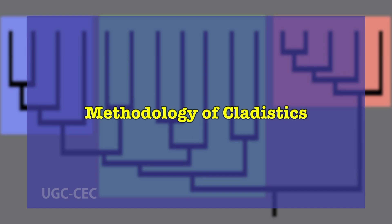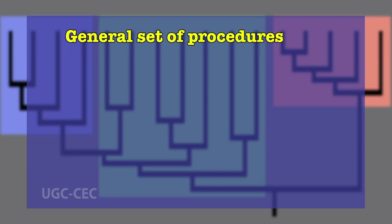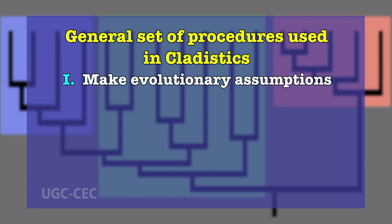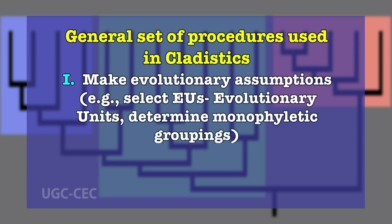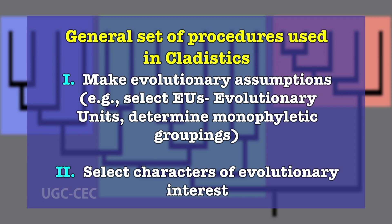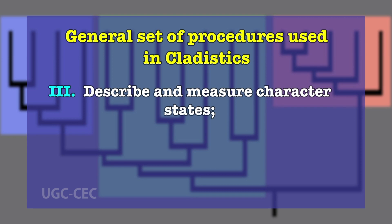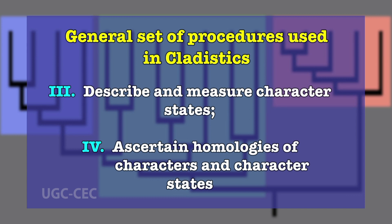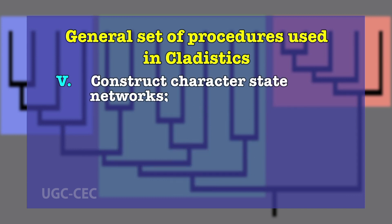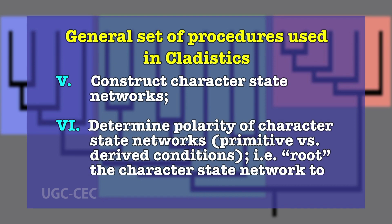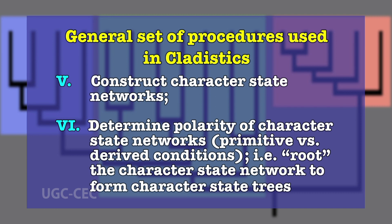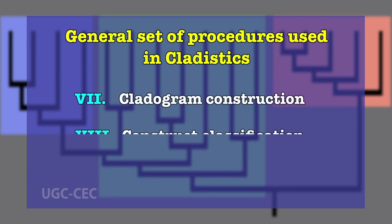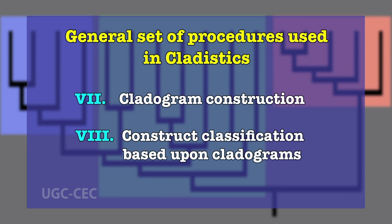Dear students, let's go through the detailed methodology of cladistics. Depending upon the types of data and algorithms for tree construction that are used, the procedures for cladistic analysis and classification will vary. Nonetheless, a general set of procedures is: 1. Making evolutionary assumptions — select evolutionary units, determine monophyletic groupings. 2. Select characters of evolutionary interest. 3. Describe and measure character states. 4. Ascertain homologies of the characters and character states. 5. Construct character-state networks. 6. Determine polarity of character-state networks — primitive vs. derived condition, i.e., rooting the character-state network to form character-state trees. 7. Cladogram construction. 8. Construct classification based upon cladograms.